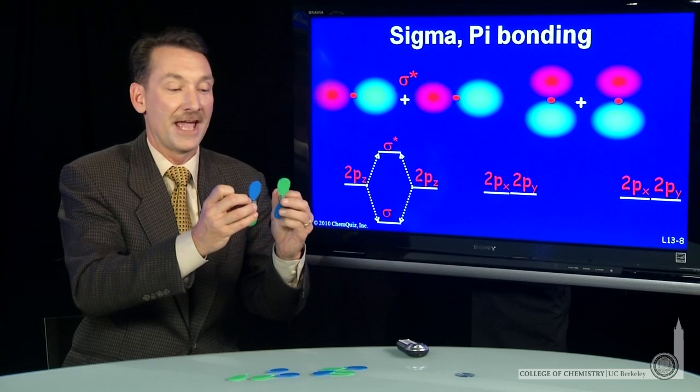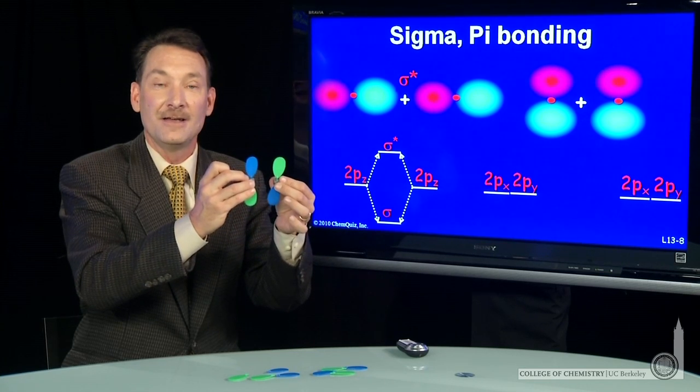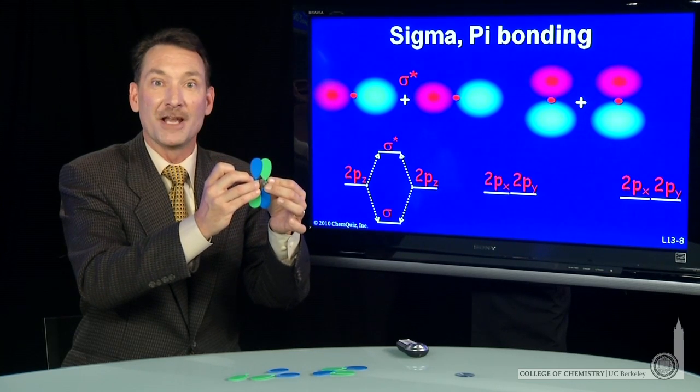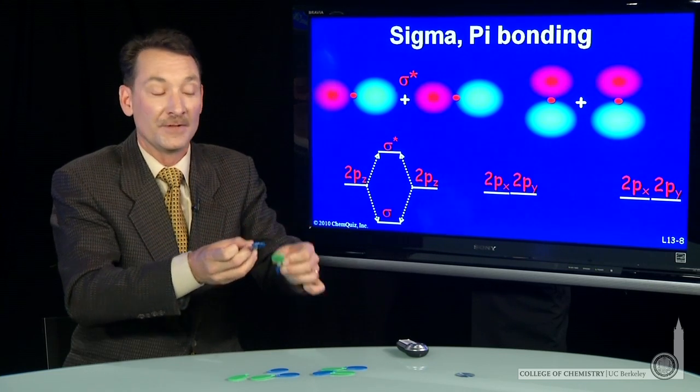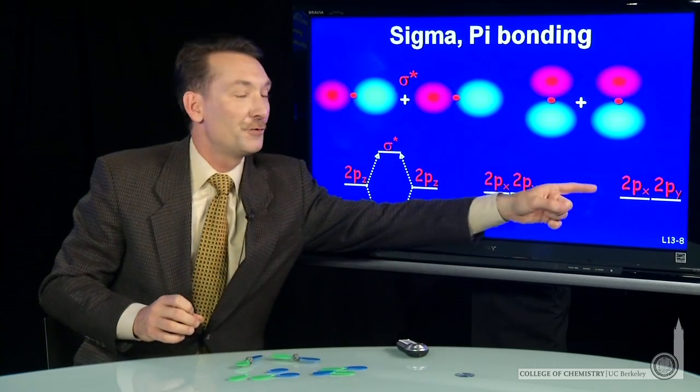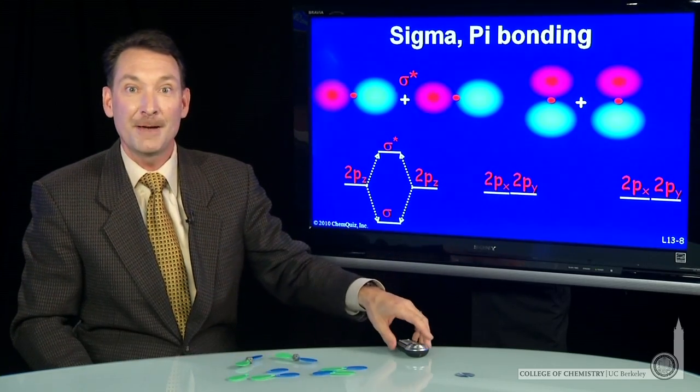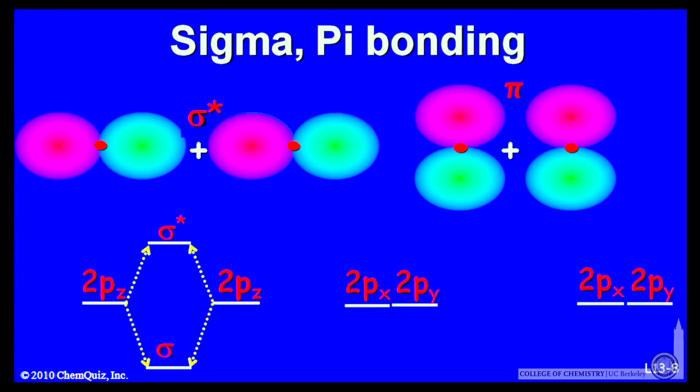And if I add them with this sign, I'll get pi antibonding orbitals, one from the px and one from the pair of py's. So I'll take one, two, three, four atomic orbitals and make four pi molecular orbitals, two bonding and two antibonding.